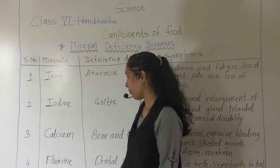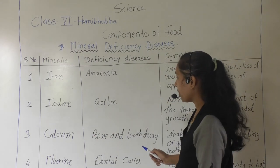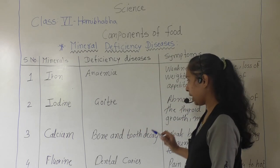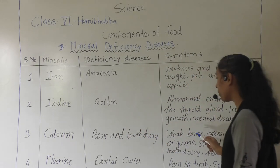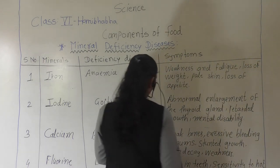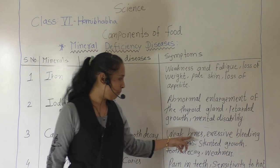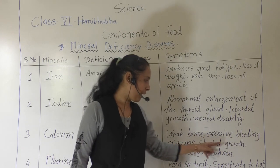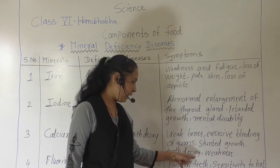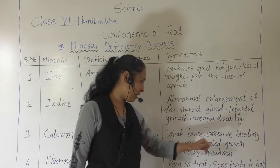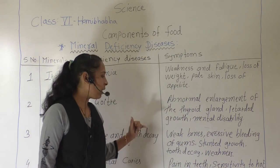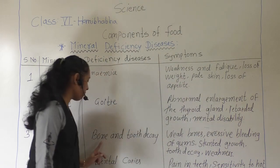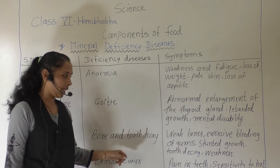The next mineral is calcium. Because of the lack of calcium, the disease that is caused is bone and tooth decay. The symptoms for bone and tooth decay are: weak bones, excessive bleeding of the gums, stunted growth, tooth decay, and weakness. Because of the deficiency of calcium, the body suffers from bone and tooth decay.